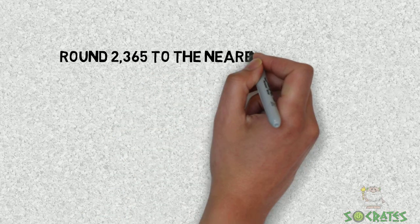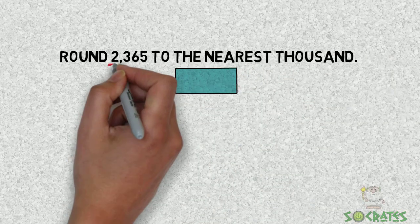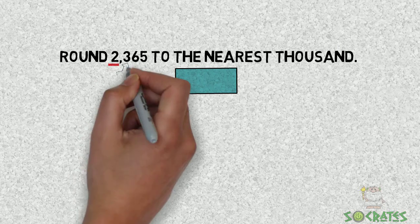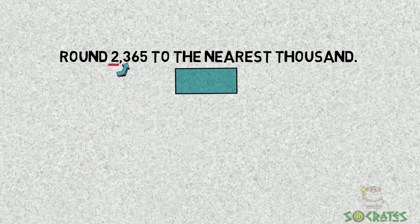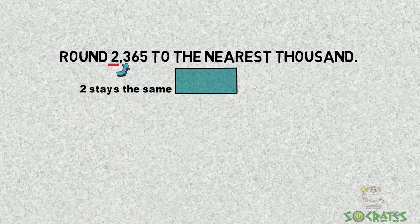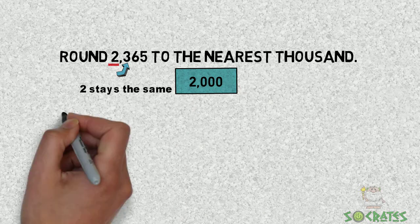Rounding two thousand three hundred and sixty-five to the nearest thousand. Mark your place which is the two. Then we look next door at the three which is less than five. So the two stays the same and zeros are their name. So two thousand is the answer.